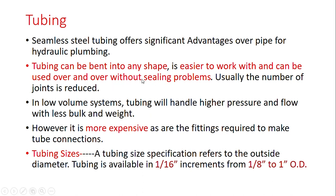When bends are made in different sizes, the number of joints is reduced. When joints are reduced, there is no chance of leakage. In low-volume systems, tubing can handle higher pressure and flow with less bulk and weight.